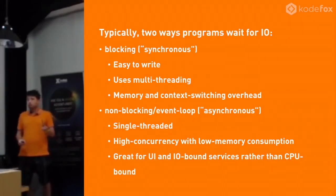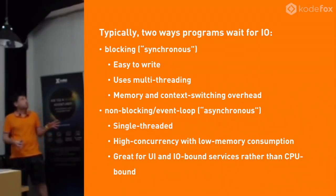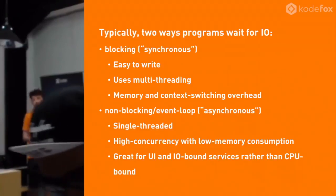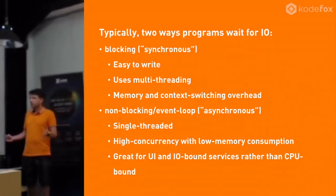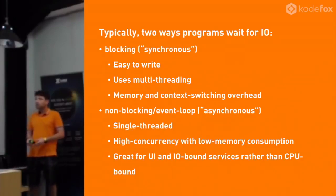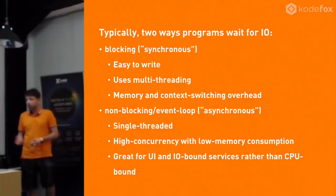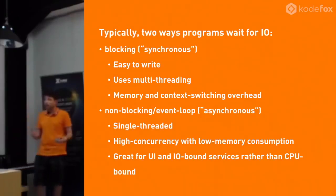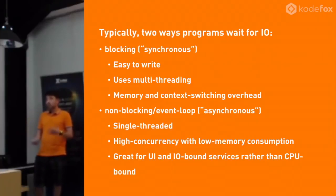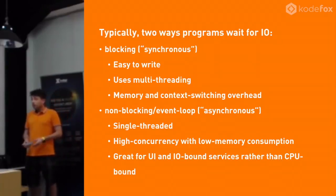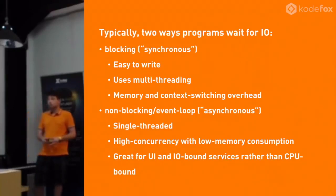There are typically two ways for a program to do IO. We have the blocking or synchronous style, which is easy to write. It's what PHP, Ruby, Python, and most server-side technologies are doing. In order for that to work, we need multi-threading, because if we stop one thread, we need another thread to continue to serve user requests. It's easy to write because you write everything sequentially. However, there's a memory overhead because every thread requires memory, and there's context switching when the CPU switches between threads.